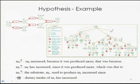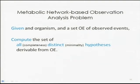Each root-to-leaf path corresponds to a hypothesis — the green ones are valid and the red ones are invalid hypotheses. Given an organism — usually we mean humans — and a set of observed events measured in blood, the problem is: compute the set of all distinct hypotheses derivable from the set of observed events.